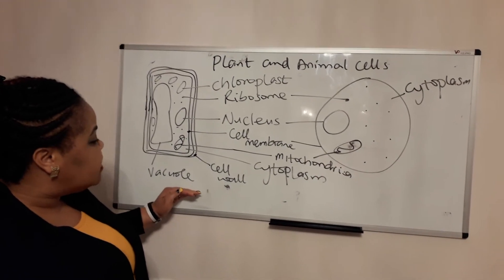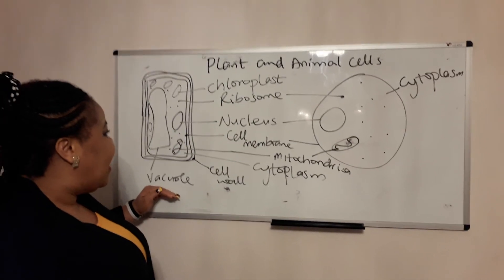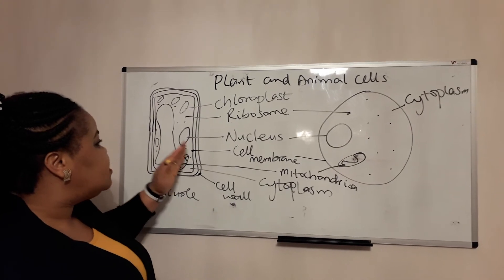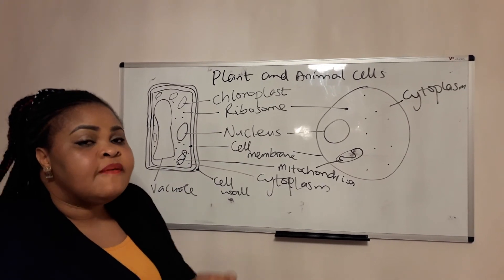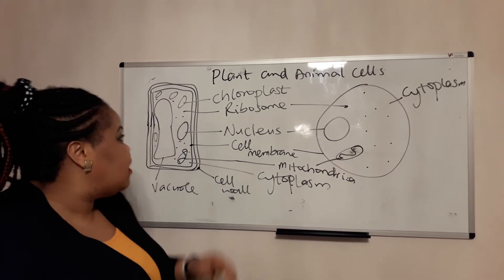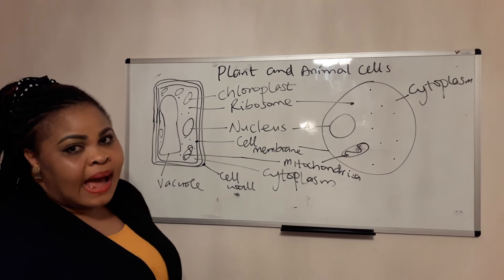And the one I haven't talked about in detail is the vacuole. The vacuole and the cell wall work together to give strength to the plant cell because the vacuole is filled with cell sap.